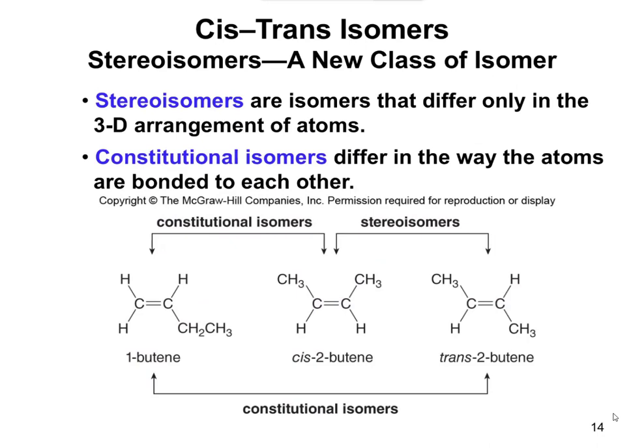Looking at this in a bigger picture: you have stereoisomers, which are what we're talking about now, and don't forget we also have constitutional isomers — so you have to be able to distinguish between them. In some cases, you'll have two molecules that are absolutely identical, like we just looked at, that look like they're isomers but they're really not. So you should be able to look at two molecules and decide whether they're identical, constitutional isomers, or stereoisomers.